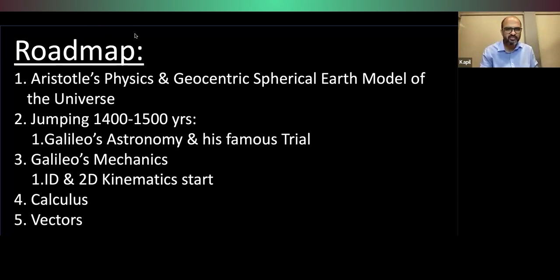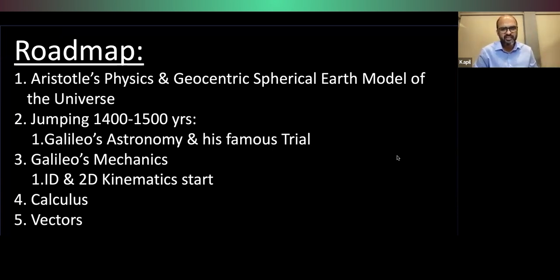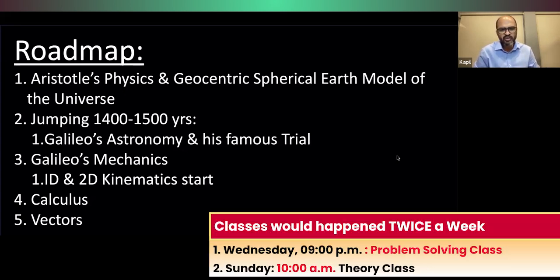Let me just share the screen. So this is what I understood from you, Omkar. After our first class where we laid the expectation of how we are going to study and what we are going to do in these lectures, moving forward — if we put the roadmap in five bullet points — we are going to cover in the next lecture: Aristotle's physics and geocentric spherical earth model of the universe. Then we jump 1400 to 1500 years into Galileo's astronomy and its famous trial. And then we come very close to what is in your coursework and textbooks. Class 9 students start reading motion and force; class 11 students have been doing it; class 12 students — hopefully it is a good revision for mechanics and developing interest in physics. And then the 4th and 5th topics are calculus and vectors.